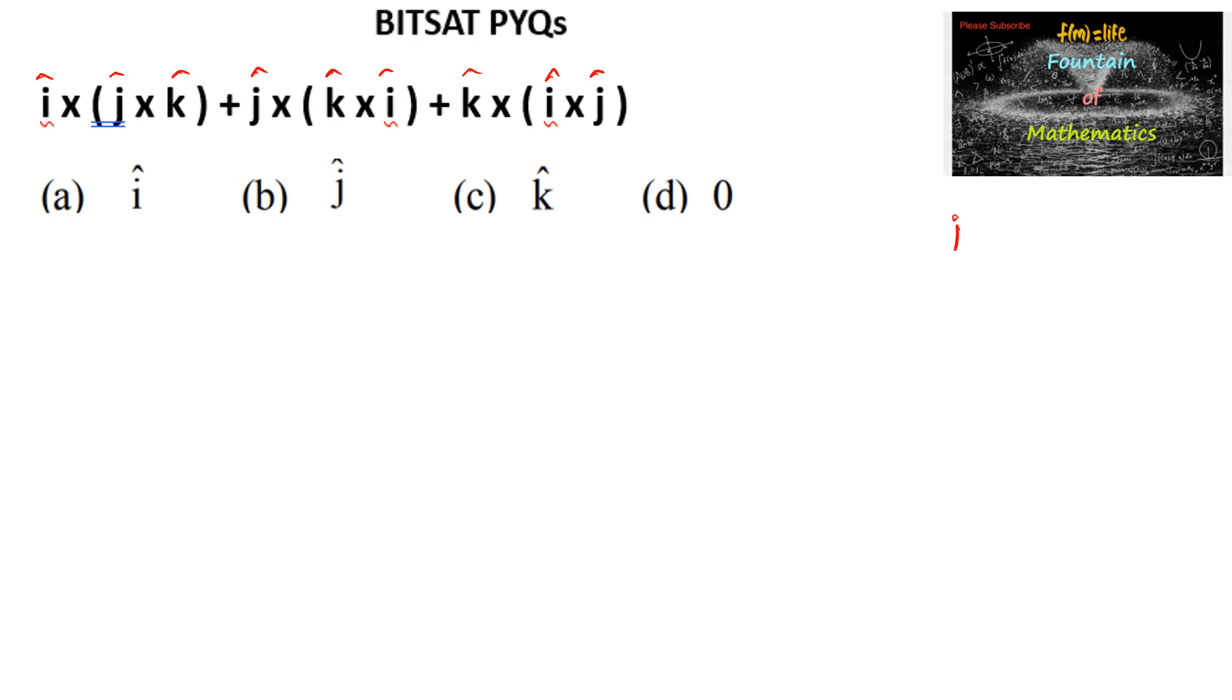We know that i cross j is equal to k, j cross k is equal to i, and k cross i is equal to j.